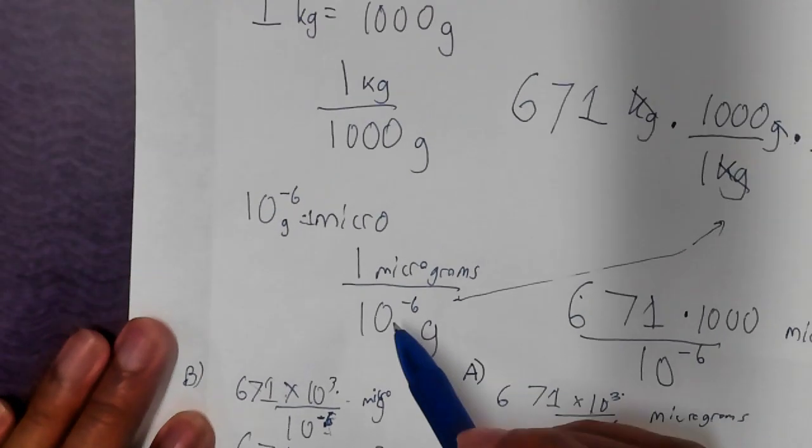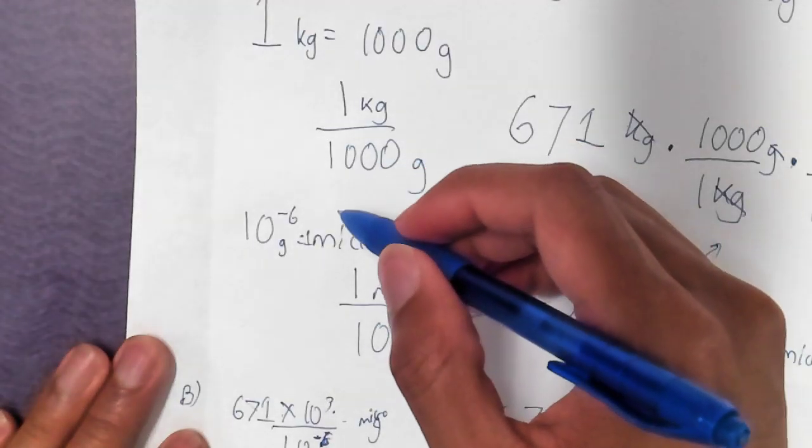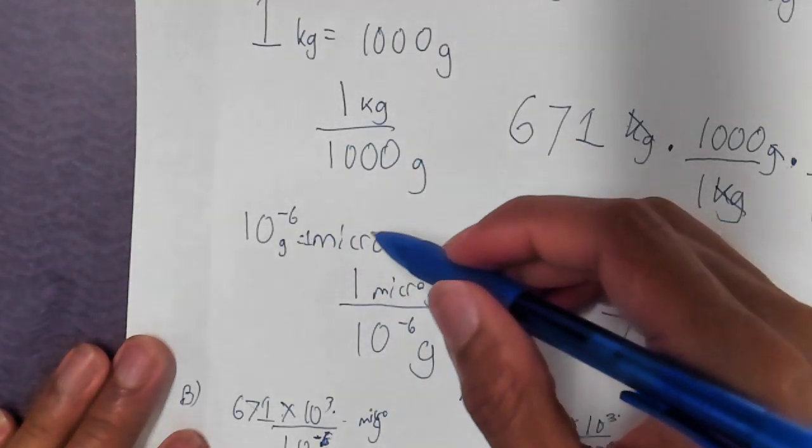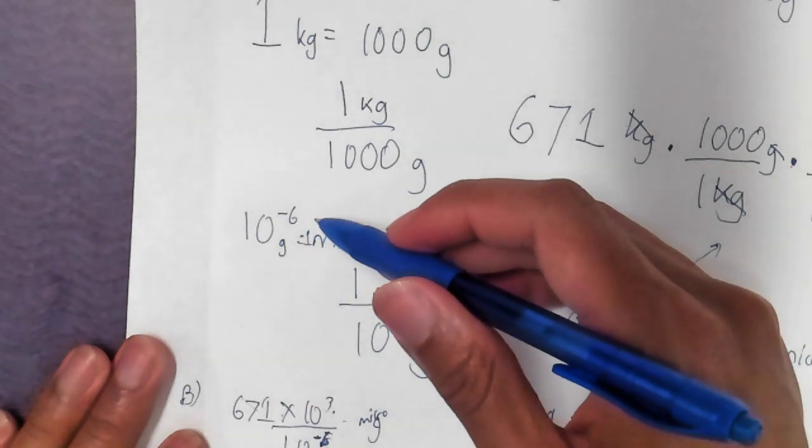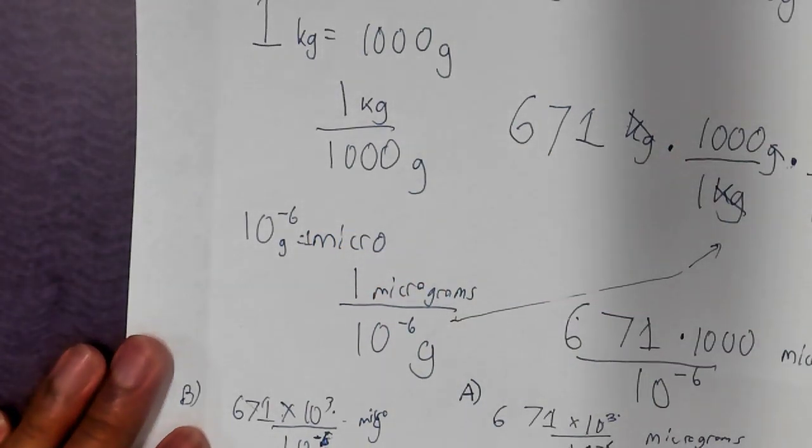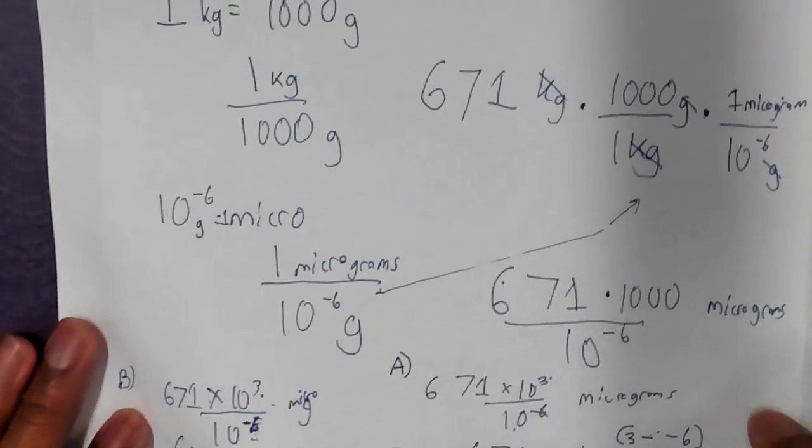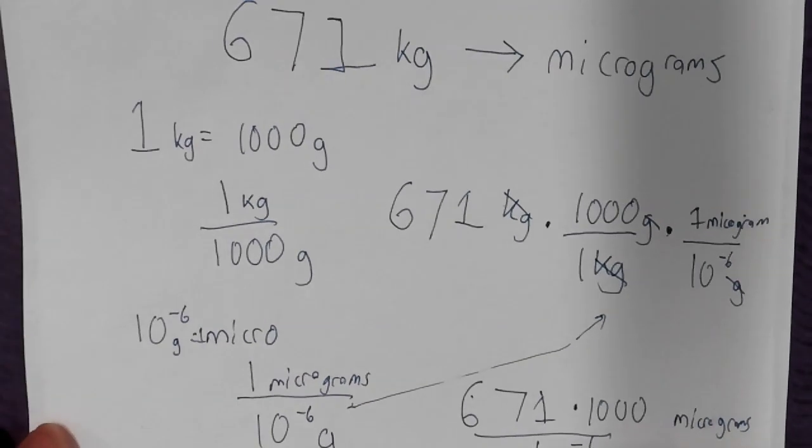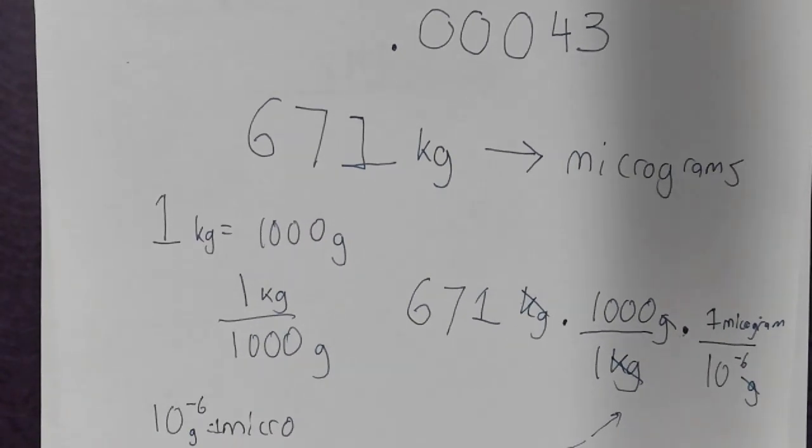Of course, you could have just kept it as whatever number this was with 6 zeros and not even done 10 to the negative 6. But I'm showing you another way you can do it. So there you have it. Go forth and be successful.